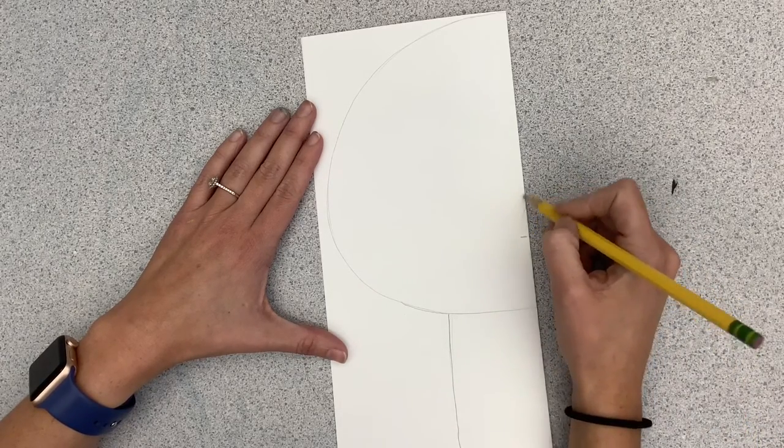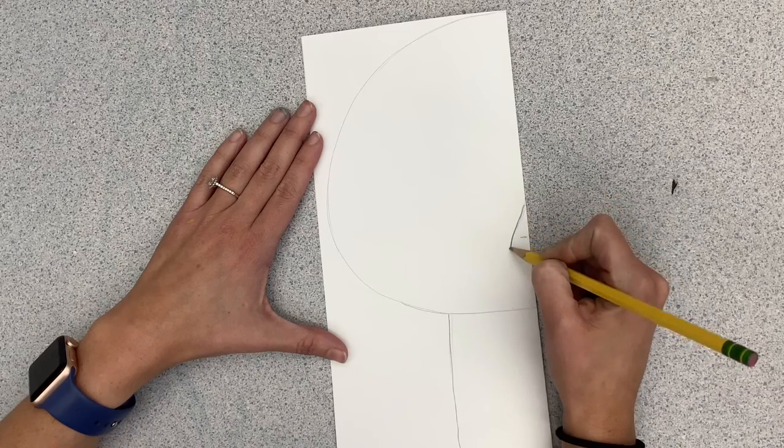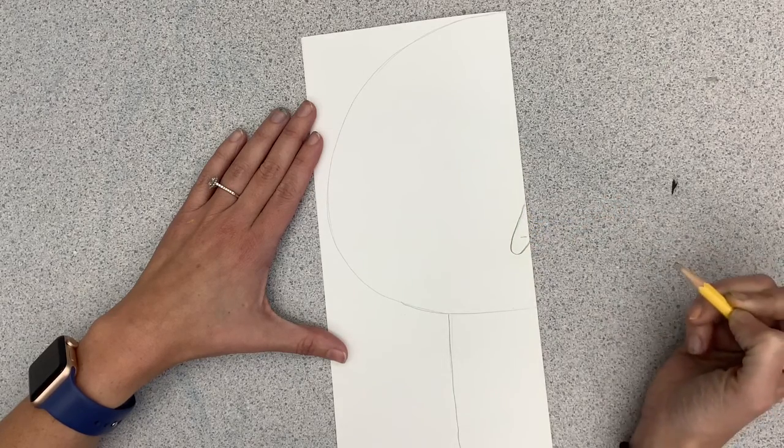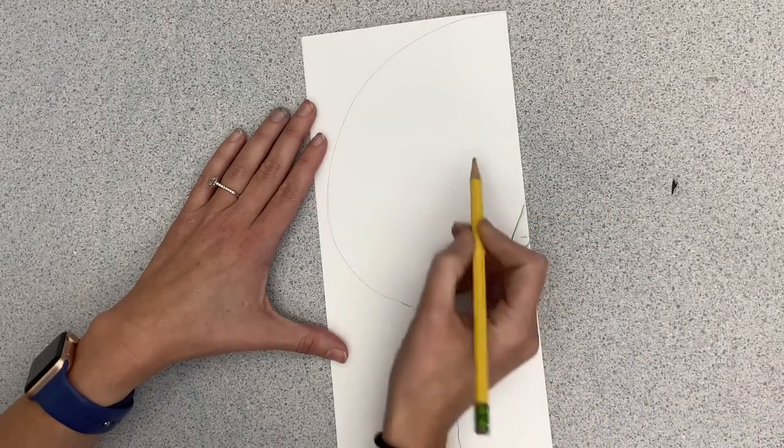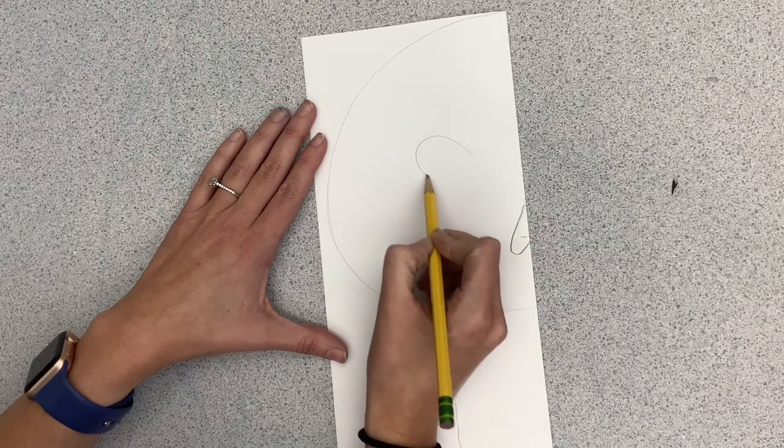Find the center of your paper and you're going to draw an upside down half of a heart. When we cut it out, it will become a full heart. That is for the nose.